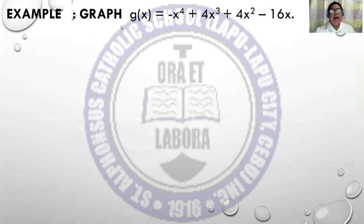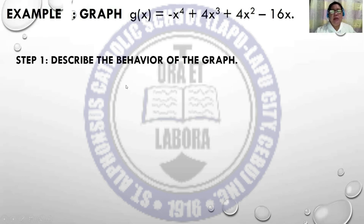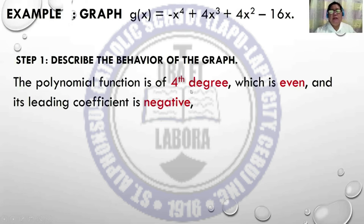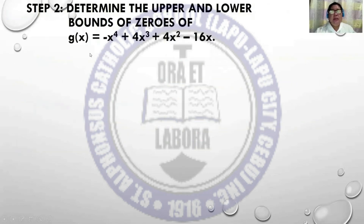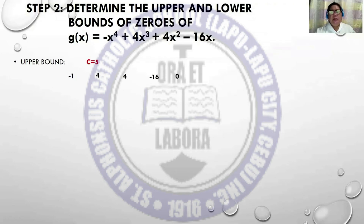Let us have Example 2. Graph g(x) = -x⁴ + 4x³ + 4x² - 16x. Step 1: describe the behavior. The polynomial function is of the fourth degree, which is even, and its leading coefficient is negative. Then the extreme left part of the graph is increasing and the extreme right part is decreasing. For the upper bound, we have c = 5. The coefficients are -1, 4, 4, -16, and 0 to replace the missing constant, with c = +5.